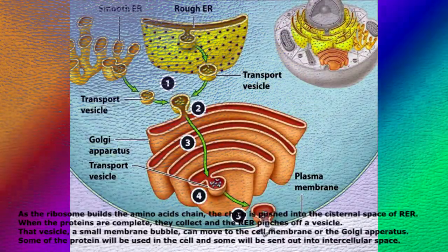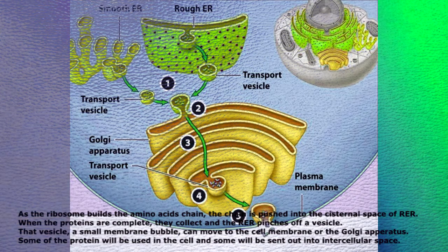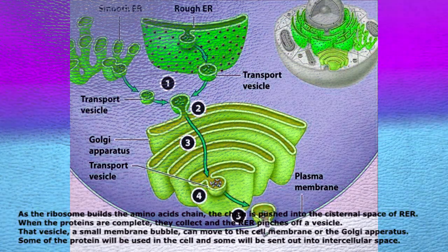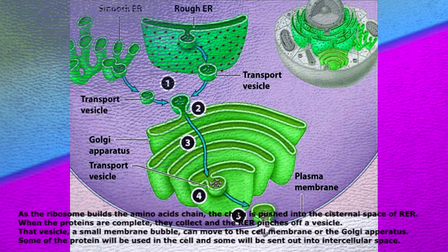Rough endoplasmic reticulum, RER for short, is a system of membranes near the nucleus that assists in the production, processing, and transport of proteins. The process of protein synthesis starts when mRNA instructions to build protein move from the nucleus to a ribosome on the surface of RER.